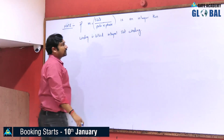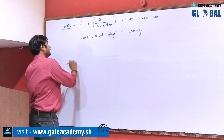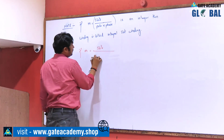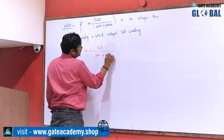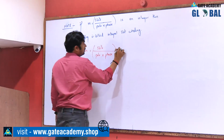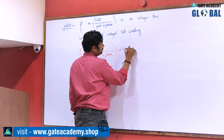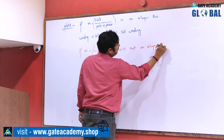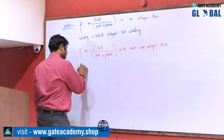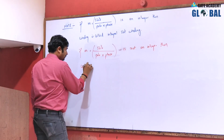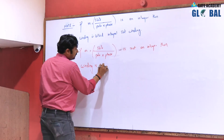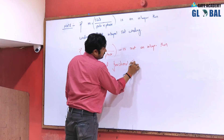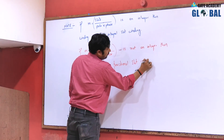All of the above formulas are valid for integral slot winding. If m, that is number of slots per pole per phase, is not an integer, then the winding is called fractional slot winding.